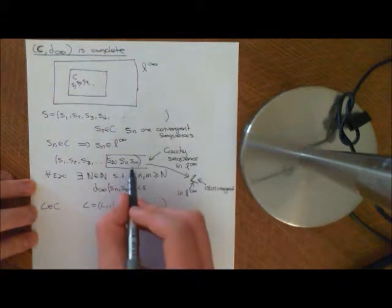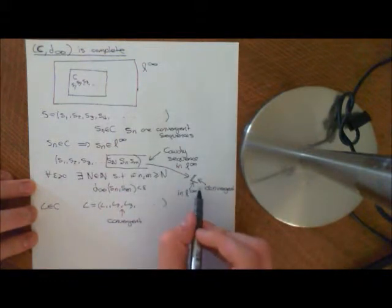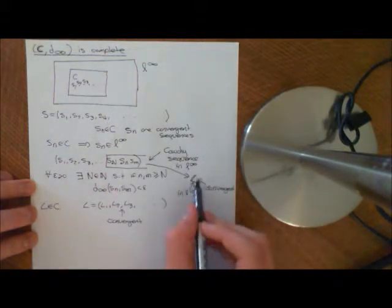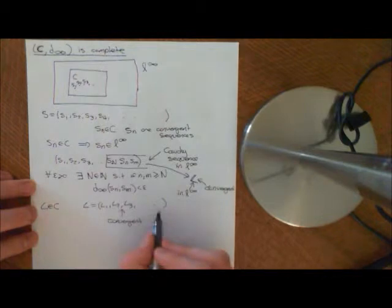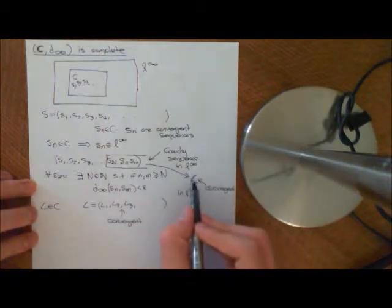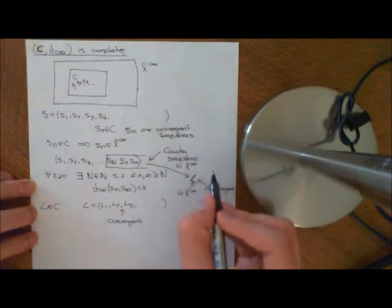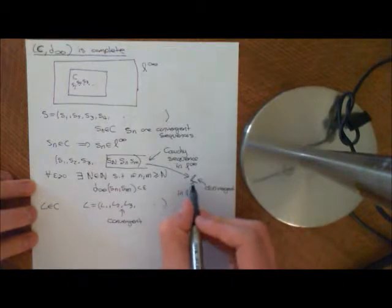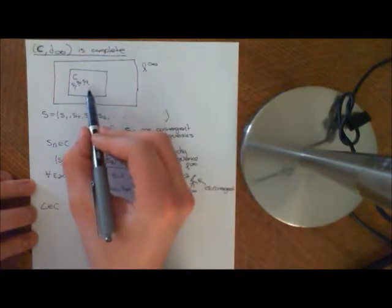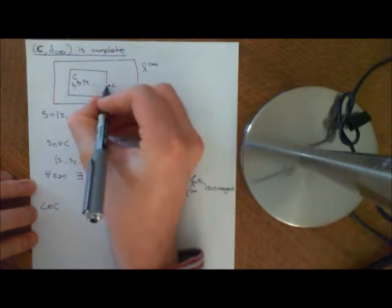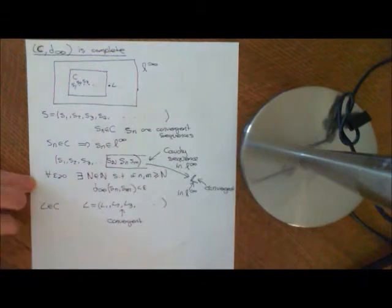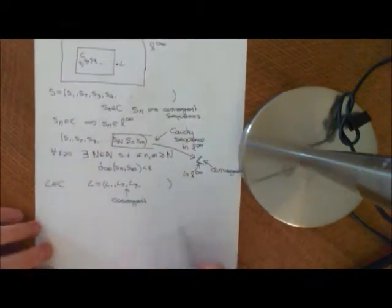Because L-infinity is a complete metric space, we can say this sequence converges to some limiting sequence L = (l1, l2, l3, ...), a sequence of real or complex numbers. What we now want to prove is that L is actually within C — that it doesn't converge to something outside of C. This limit must also be in C, which is the statement that the sequence L itself converges.